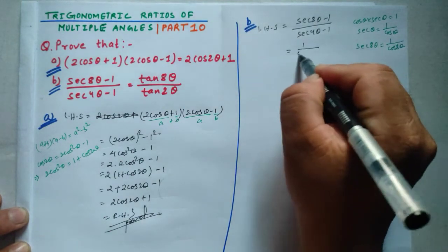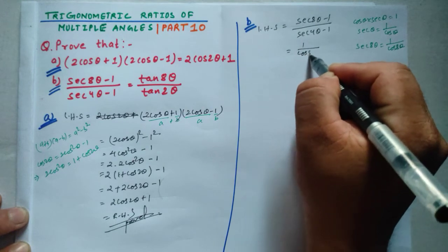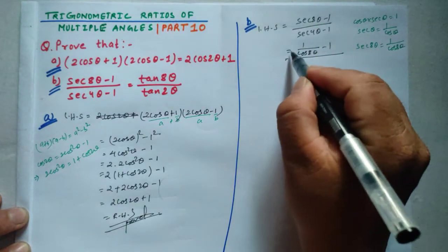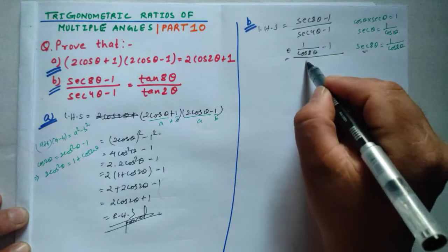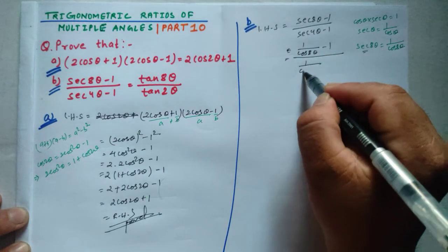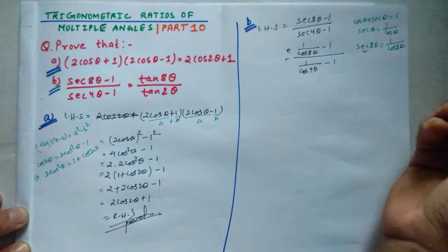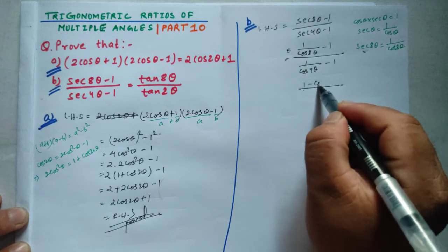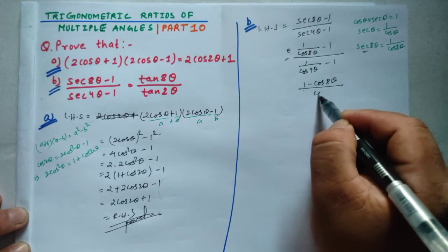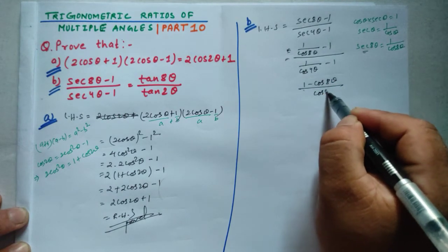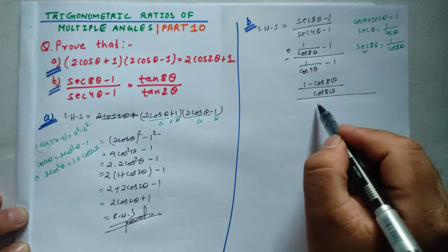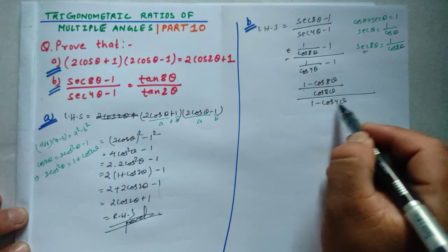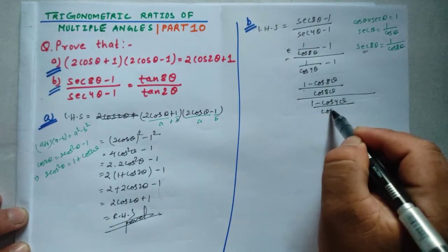We rewrite: (1/cos8θ - 1) / (1/cos4θ - 1), which becomes (1 - cos8θ)/cos8θ divided by (1 - cos4θ)/cos4θ.